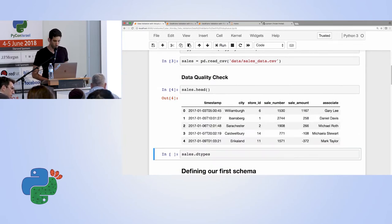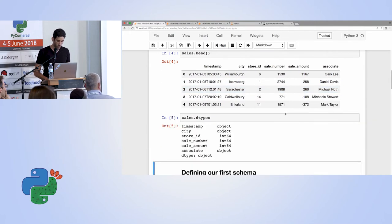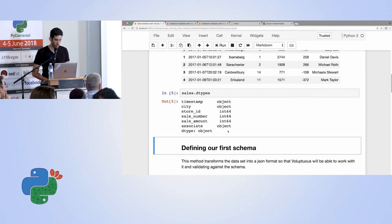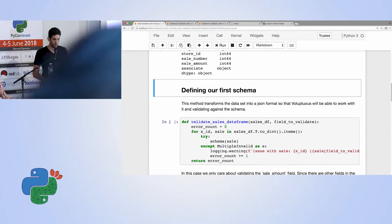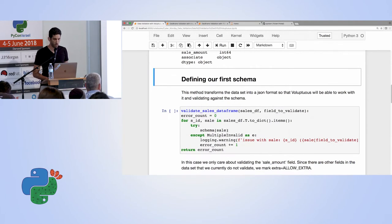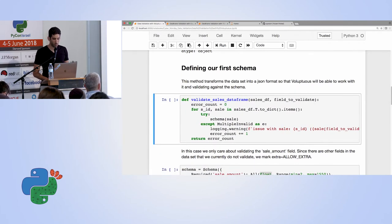So I hope that you can see okay. I'll just run through the few couple of cells. Basically, we have some imports and logging and then we read a sales data set. Let's take a look at the data. So we have several columns, timestamp, city, store ID, sale number, sale amount, and the associate, which is the person who made the sale. We can look at the data types of our different features.